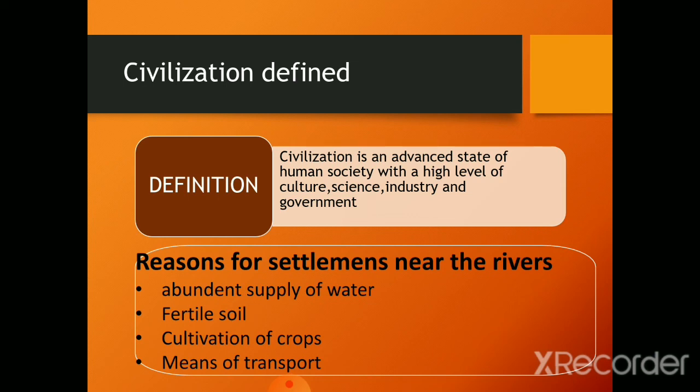Now, what are the reasons for these civilizations to settle near the rivers? Why did these civilizations flourish near the rivers? All of you know that rivers supply plenty of water, which is a basic need for every living organism. Water could be used for a variety of purposes like cooking, washing, drinking, and irrigation of crop fields.